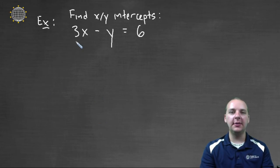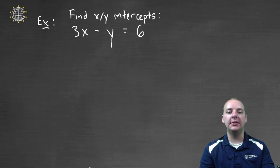So let's try one. Let's see if this is actually any good. Here's a linear equation, three X minus Y equals six, and let's see if we can find the X and the Y intercept, and see how easy that is.